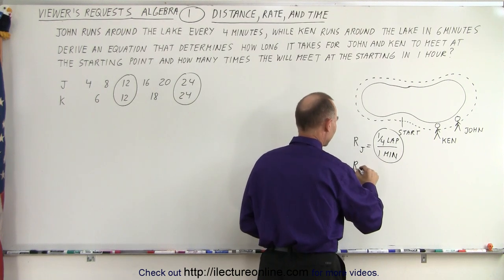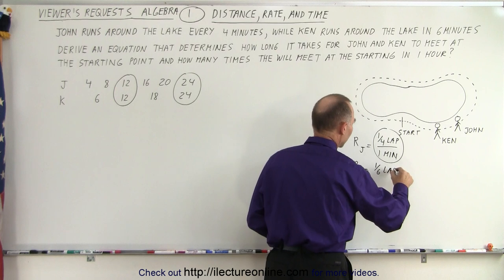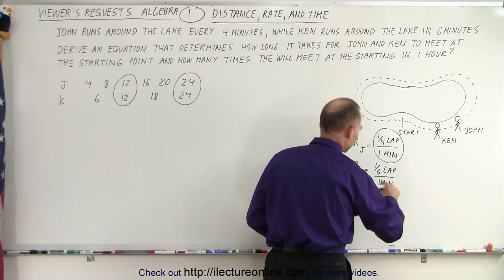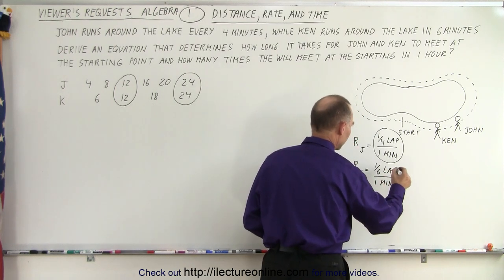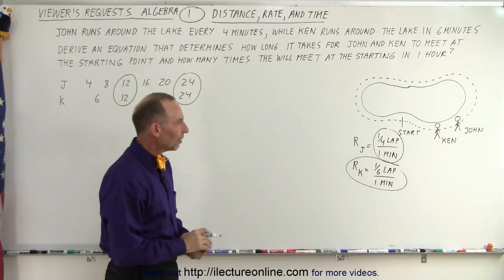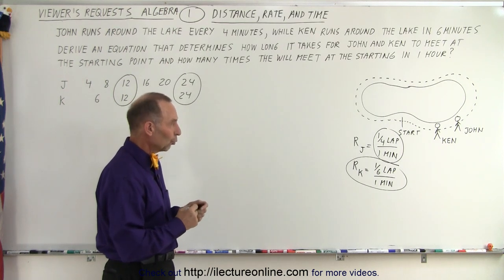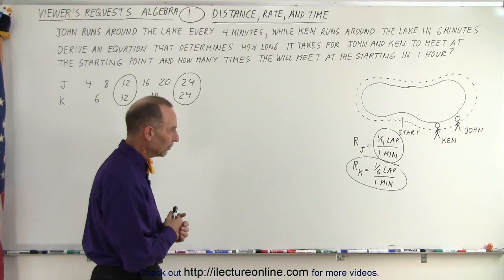The rate for Ken is equal to one-sixth of a lap in one minute. That is how we express the rate for John and the rate for Ken. John can run a quarter of a lap in a minute, and Ken can run a sixth of a lap in a minute.